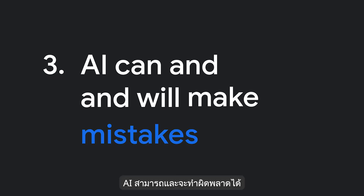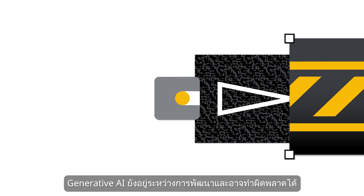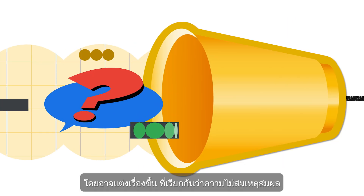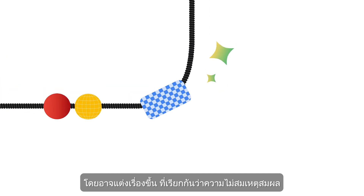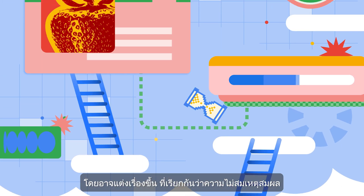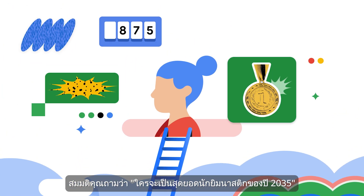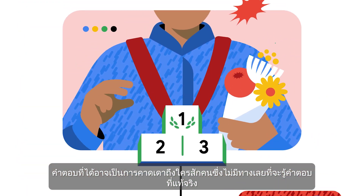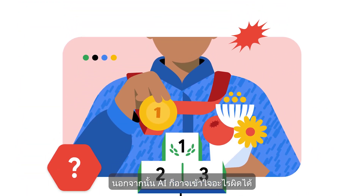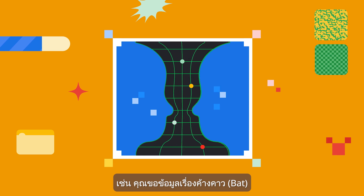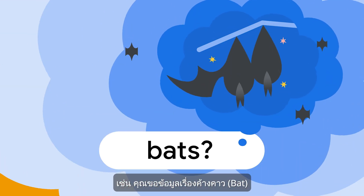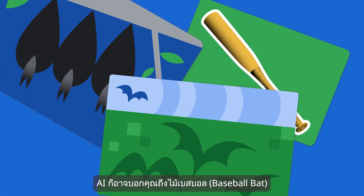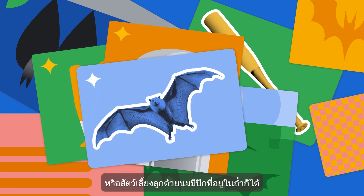AI can and will make mistakes. Generative AI is a work in progress, and it can make mistakes. It may make things up — this is known as a hallucination. Say you ask who will be the top gymnast in 2035. The response may predict someone, even though there is no way to truly know. It may also misunderstand things. For instance, you ask for information about bats — it might tell you about the type used in baseball or those winged mammals that live in caves.